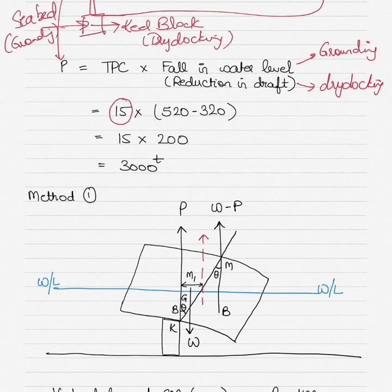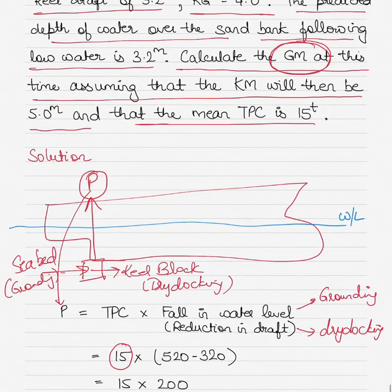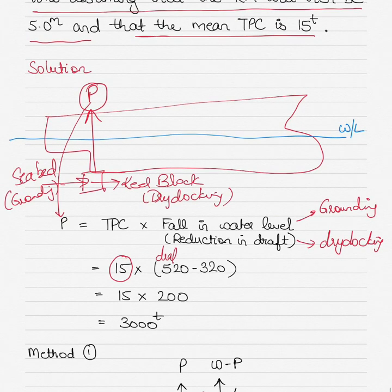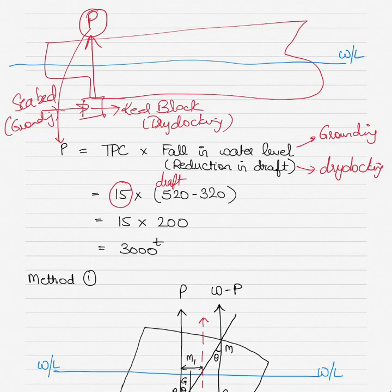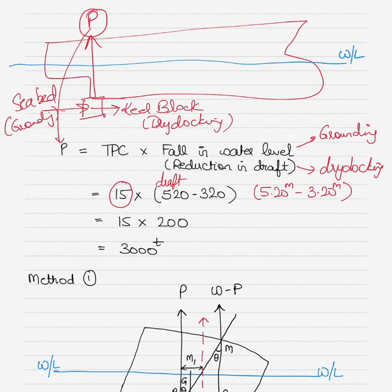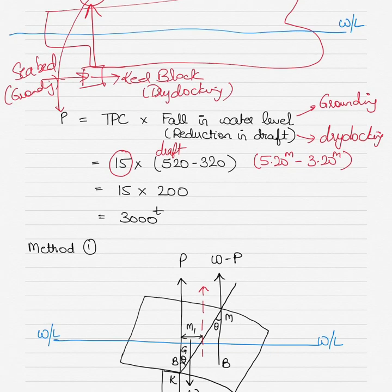TPC is given as 15. The fall in water level is from the draft of 5.20 meters down to 3.20 meters — the depth of water at low water — and both values are converted to centimeters, because TPC stands for tons per centimeter immersion. So: P = 15 × 200 cm = 3,000 tons. That is the upward thrust.